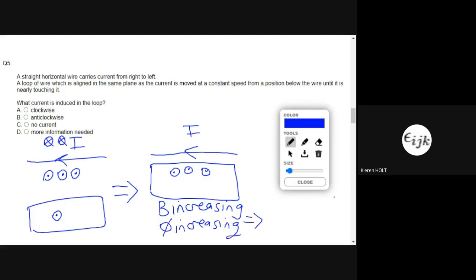Now by Lenz's law, the induced EMF will oppose the change, so the induced current will oppose the increase in flux and that means the induced current will be in the opposite direction.